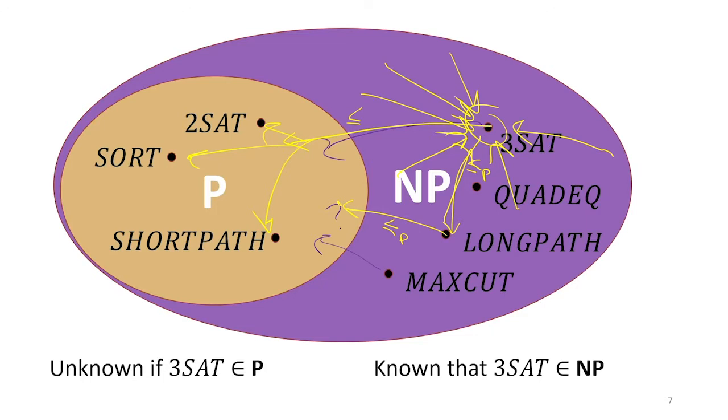If we can prove that we can't, if we can get a separation and know that there's no problem in P that it can be reduced to, well, that would mean that the classes are different. That would explicitly be an example of here's a function in NP that's not in P.